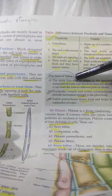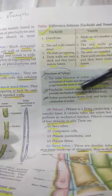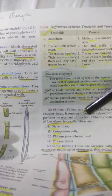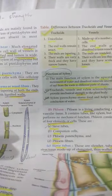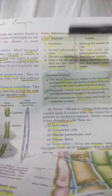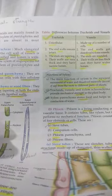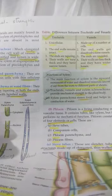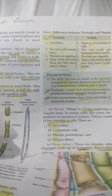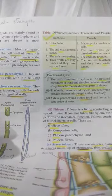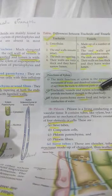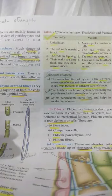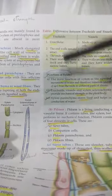Coming to the functions of xylem. The main function is conduction of water and dissolved minerals from roots to different parts of the plant. Apart from this, tracheids, vessels, and xylem sclerenchyma give strength to the plant body. Xylem parenchyma, apart from conduction of water, also stores food.